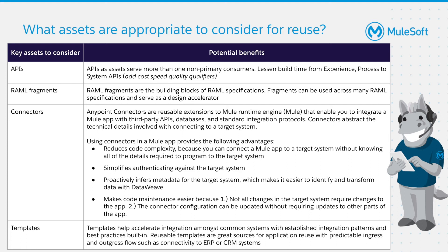APIs as assets can serve more than just one primary consumer, which helps to reduce build time all the way from experience and process to system APIs. RAML fragments — which we already touched on during the design phase — can be seen as the building blocks of RAML specifications. They can be used across many RAML specifications and serve as a design accelerator.